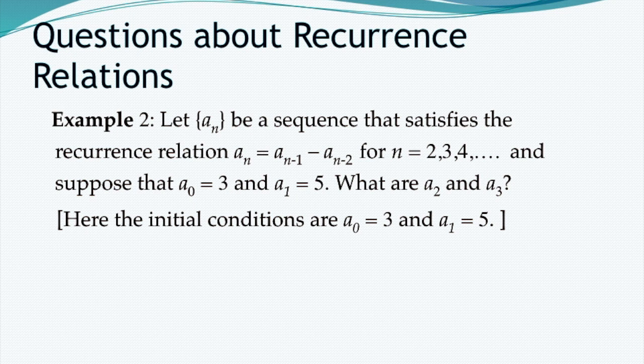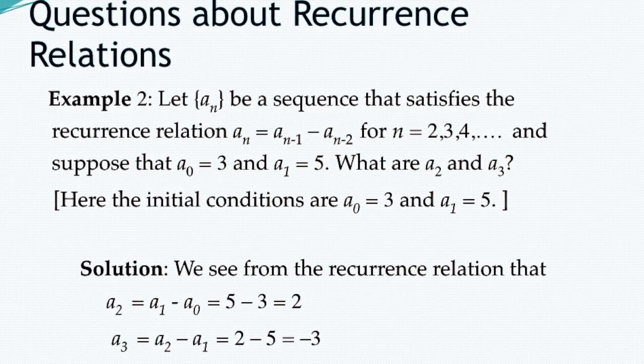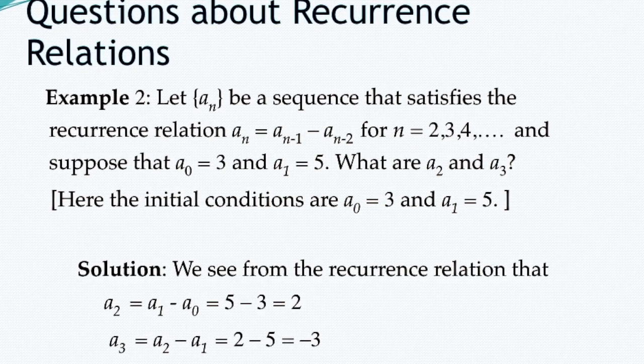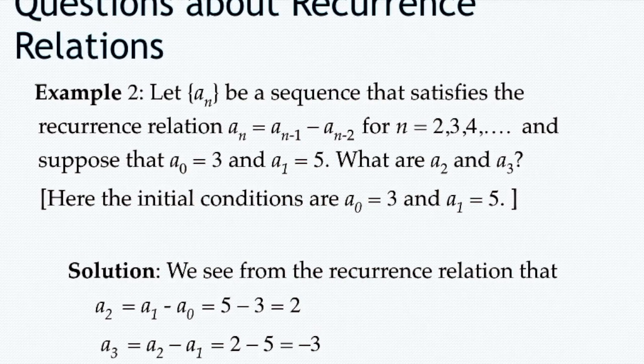Another example: a sequence satisfying a(n) = a(n-1) - a(n-2) for n = 2, 3, 4, with given values a0 = 3 and a1 = 5. Then a2 = a1 - a0 = 5 - 3 = 2.